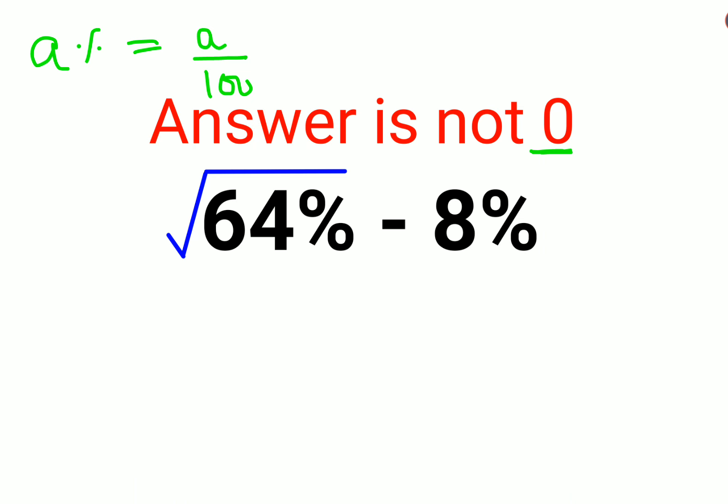So let's write root of 64% as 64 upon 100, and minus 8% can be written as 8 upon 100.